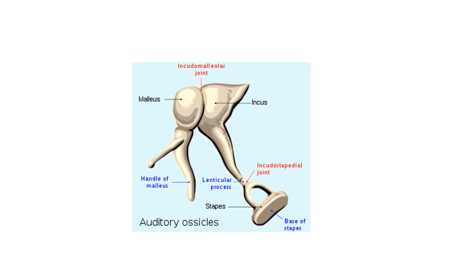The vertebral column, also known as the spinal column or backbone, is present posteriorly. It is composed of a series of bones known as vertebrae — about 71 cm long in adult males and 61 cm in females. During childhood there are 33 bones in total, but in adults the number reduces to 26 because the five sacral bones fuse into one sacrum and the four coccyx bones fuse into one coccyx.